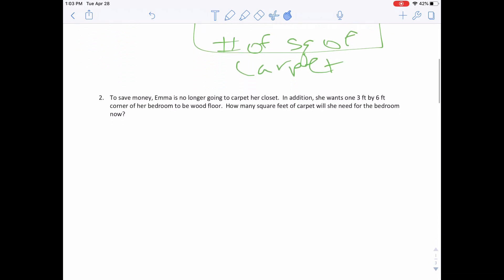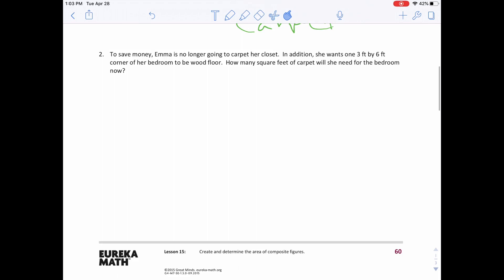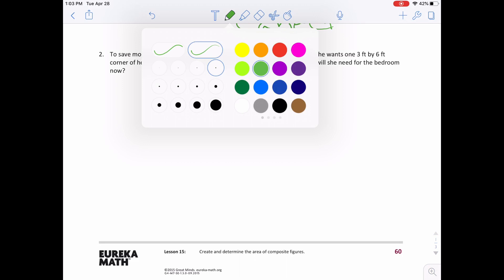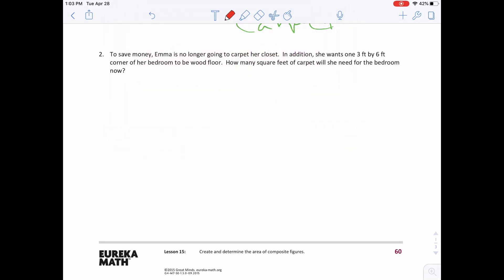Number 2 says, to save money, Emma is no longer going to carpet her closet. In addition, she wants one 3 feet by 6 feet corner of her bedroom to be a wood floor. How many square feet of carpet will she need for her bedroom? So this is going to be starting back out with the 11 by 12 feet. And now we are going to have to take out a chunk of her carpet that is 3 feet by 6 feet.